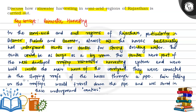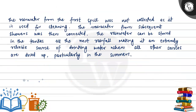They were connected to the sloping roofs of the house through a pipe. Rain falling from the rooftop would travel down the pipe and was stored in these underground tankas. The rainwater from the first shower was not collected as it was used for cleaning purposes. The rainwater from subsequent showers was then collected and could be stored in the tankas till the next rainfall, making it an extremely reliable source for drinking water.